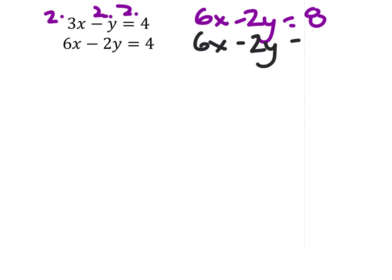We got 6x minus 2y equals 4, but I need the coefficients to be opposites now, so I need this to be a plus 2y. So I would change these signs.